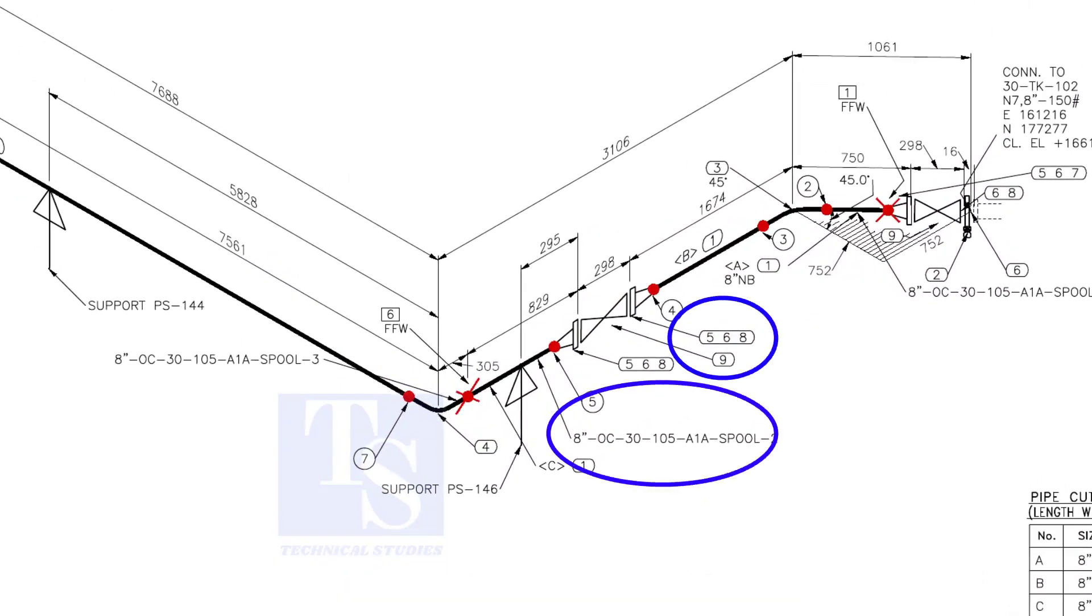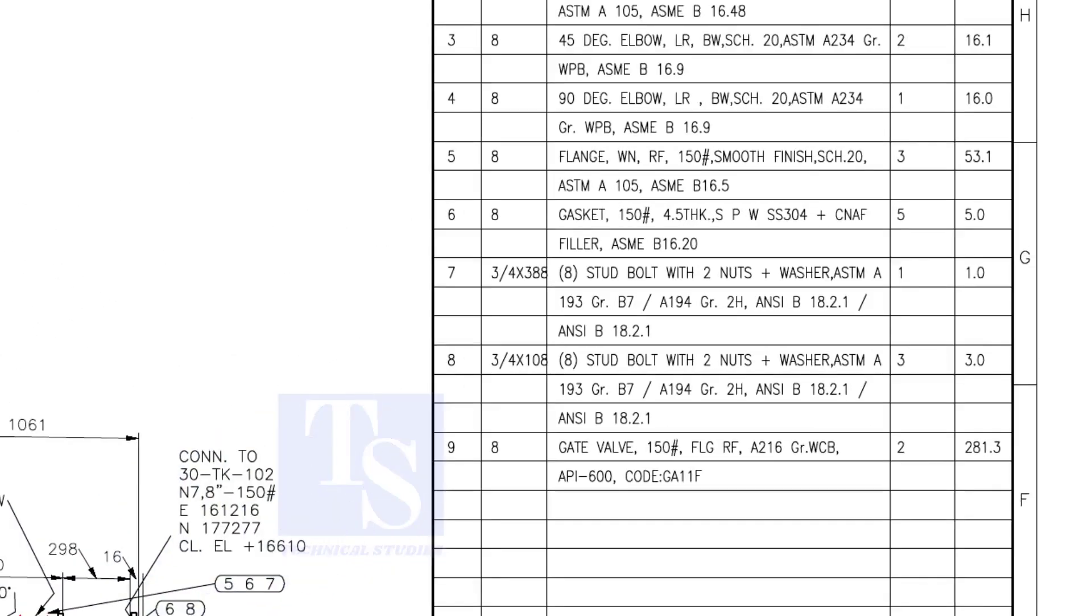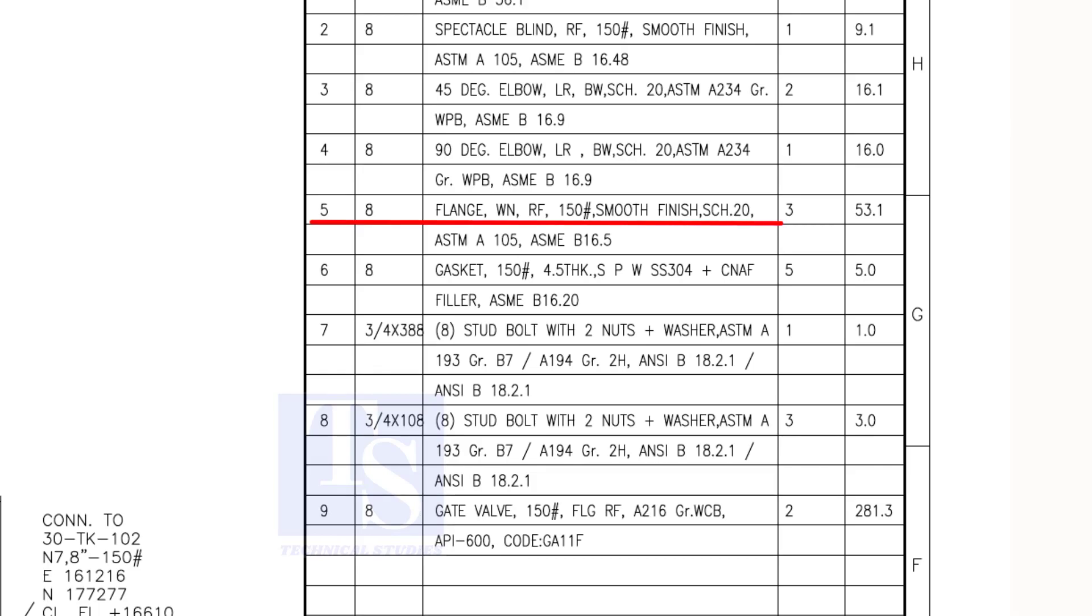In spool number two, check what are items five, six, and eight. We already know item number one is pipe. Item number five is weld neck raised face flange, rating 150 pound. Item number six is spiral wound gasket, and item number eight is stud bolts. Both these items are not relevant for prefabrication unless the pipe length is not affected.